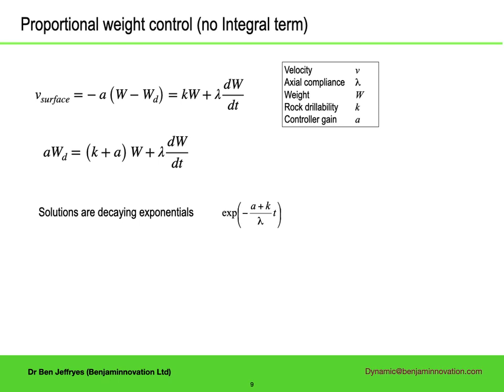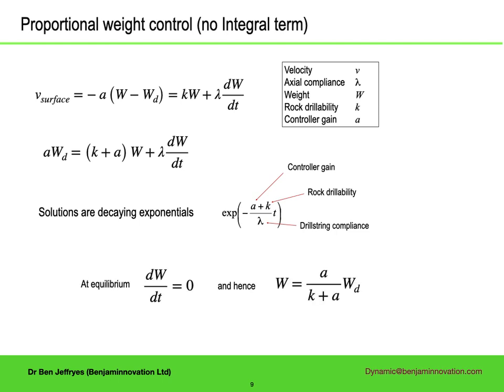Solutions look like a decaying exponential, where the time constant is the drill string compliance lambda, divided by the sum of the controller gain and the rock drillability. So whatever the initial conditions, the system will converge exponentially to a constant weight, with the time constant increasing as the drill string gets longer. But what weight will it converge to? At equilibrium, the rate of change of weight is zero, and hence the weight is the desired weight Wd times the proportional gain A, divided by the sum of the proportional gain and the rock drillability — i.e., not the desired weight.